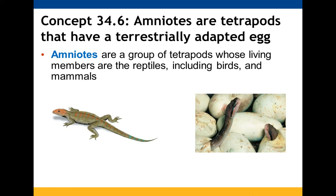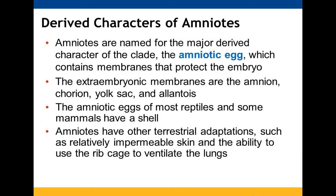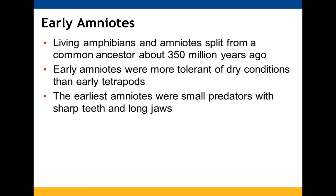Amniotes have a terrestrially adapted egg — this includes reptiles, birds, and mammals. The derived characters include the amniotic egg with embryonic membranes surrounding the embryo. Most reptiles and mammals have waterproof skin and use rib-based breathing. Amphibians and amniotes are thought to have split from a common ancestor around 350 million years ago. Early amniotes tended to be small predators.